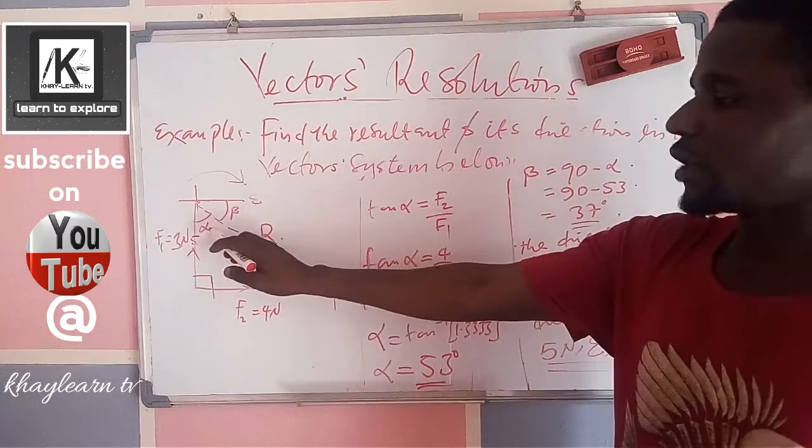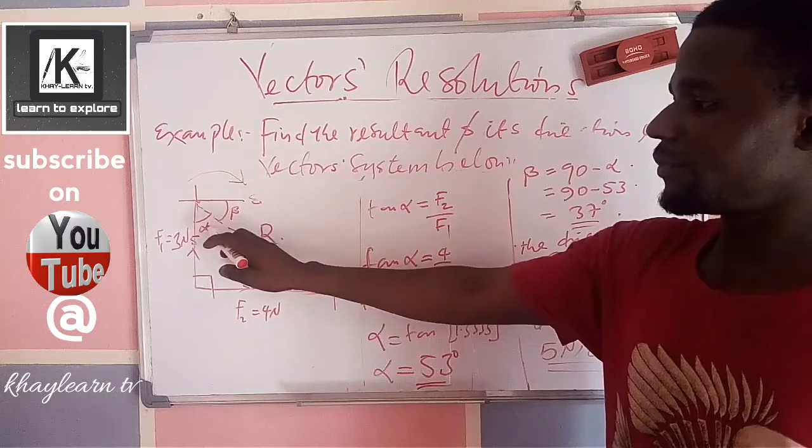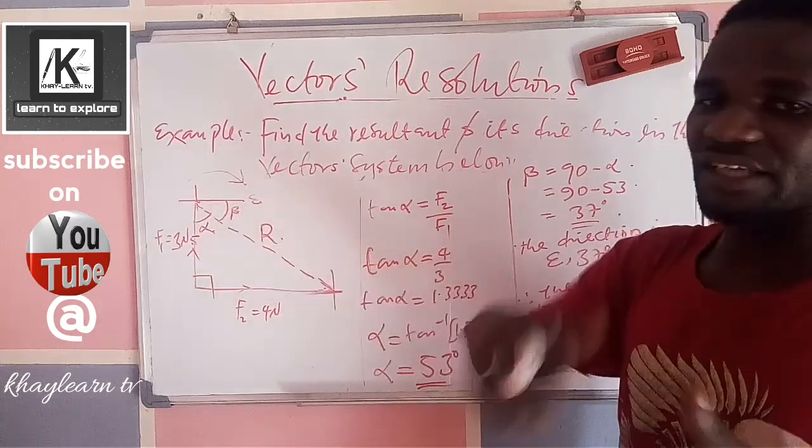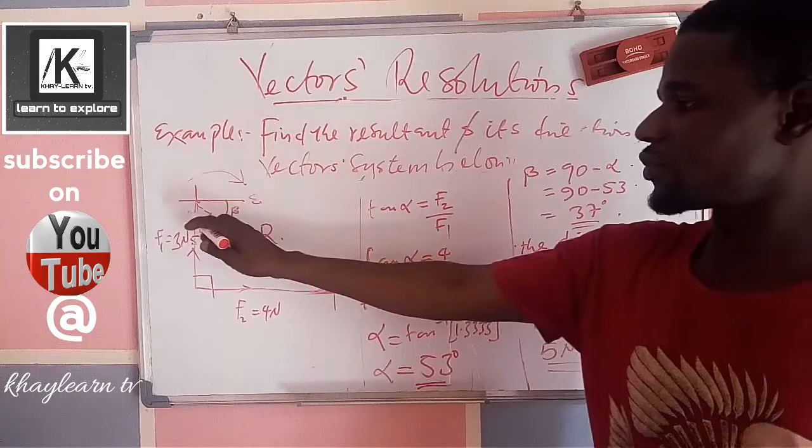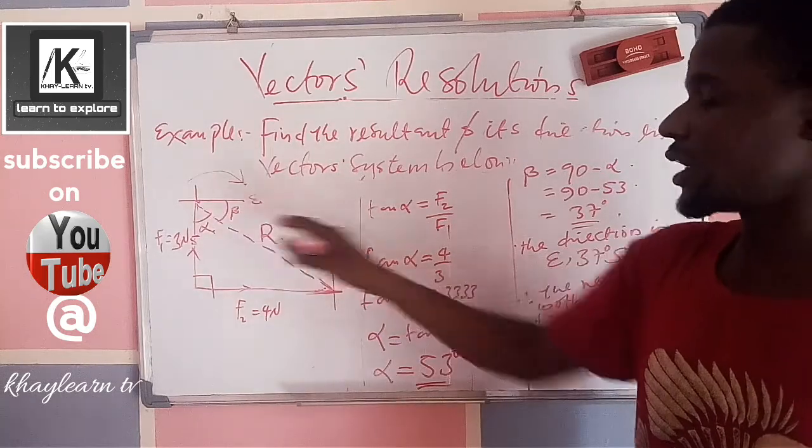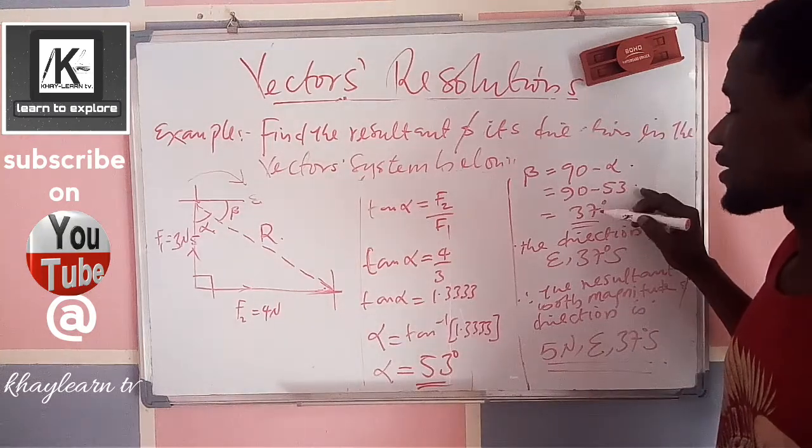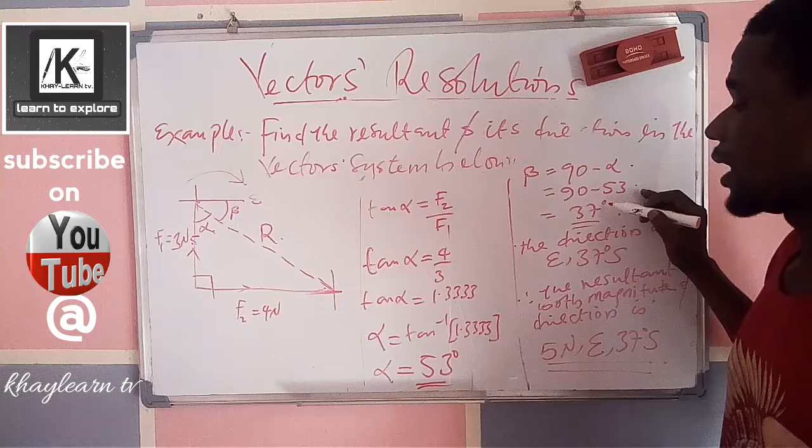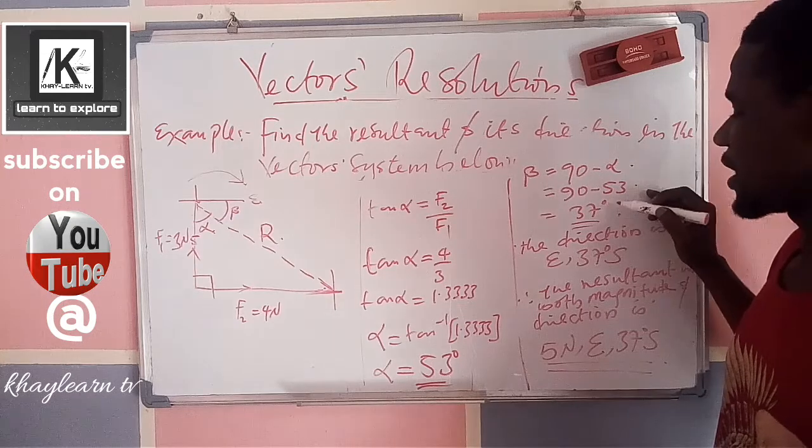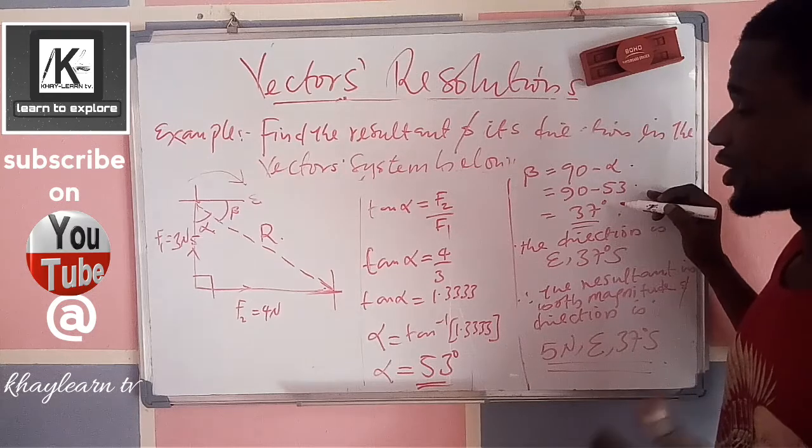Now, we have this angle to be alpha, so we are looking for this beta. You know, the relationship between alpha and beta, alpha and beta is just 90 degrees. The line from here to here is 90 degrees, so automatically, we have 53 degrees to get the beta. We subtract that 53 degrees from 90 degrees. What we have is 37 degrees as the value of our beta. Since beta is 37 degrees, which is the angle of the direction.